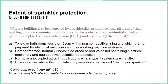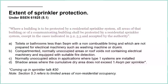There's a similar statement in 16925: where a building is to be protected by a residential sprinkler system, all areas of that building or of a communicating building shall be protected by a residential sprinkler system. Generally speaking, we want all areas to be protected except in the following cases and as accepted by the authority. Toilets or bathrooms up to five square metres are excluded, with additional detail in this standard specifying non-combustible lining and not prepared for electrical machinery such as washing machines or dryers. So they make the distinction that if your bathroom is also a utility room with other equipment, you should continue to sprinkler protect it.